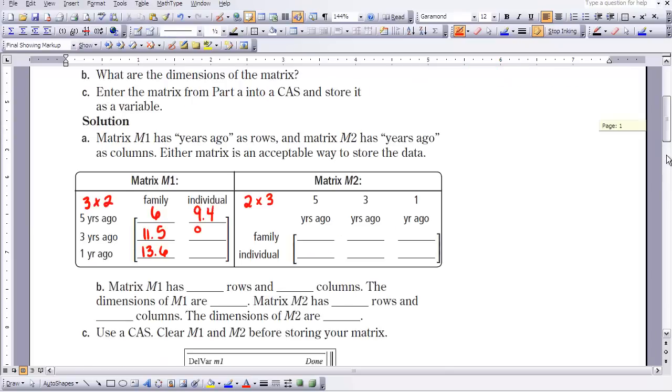So here you can see I've entered this information into my matrices. So I took the family plans five years ago, six, three years ago it was 11.5, and one year ago it was 13.6. And if you notice this first column, then in the second matrix was put into a row form, and then the individual along the 5, 3, 1 went along the row here. So each matrix stores the same data, they're just stored in a different way. So matrix 1 has three rows and two columns, and it has dimensions then of three by two.